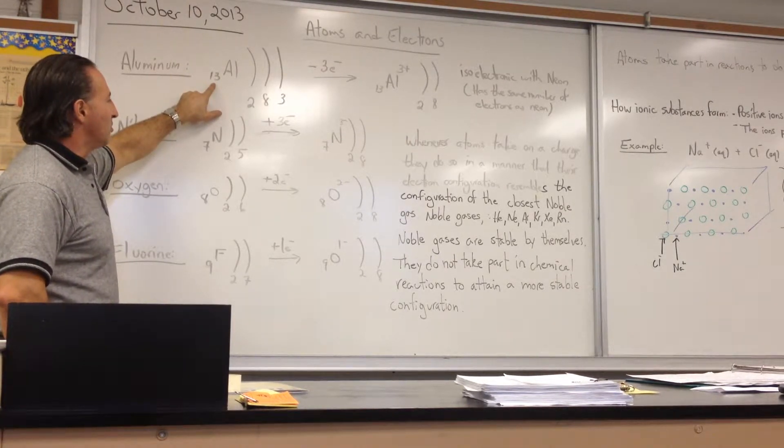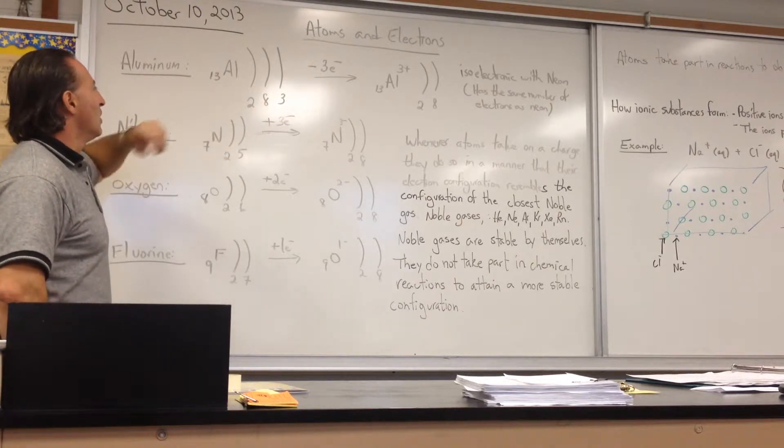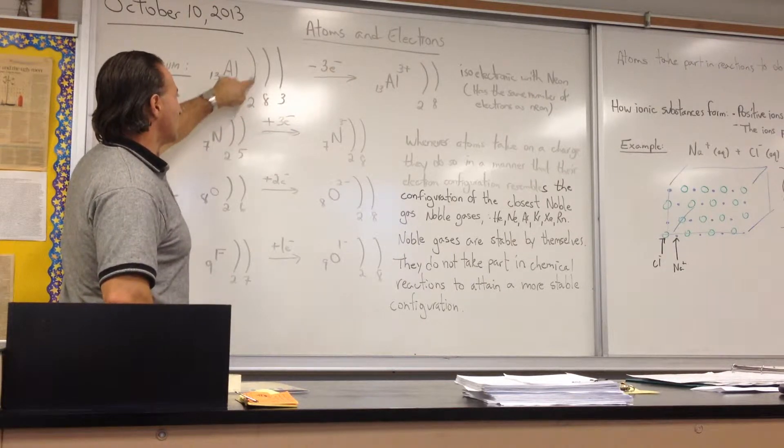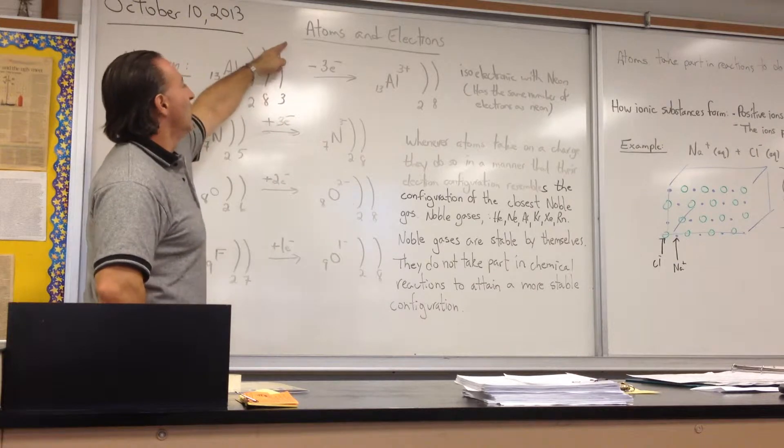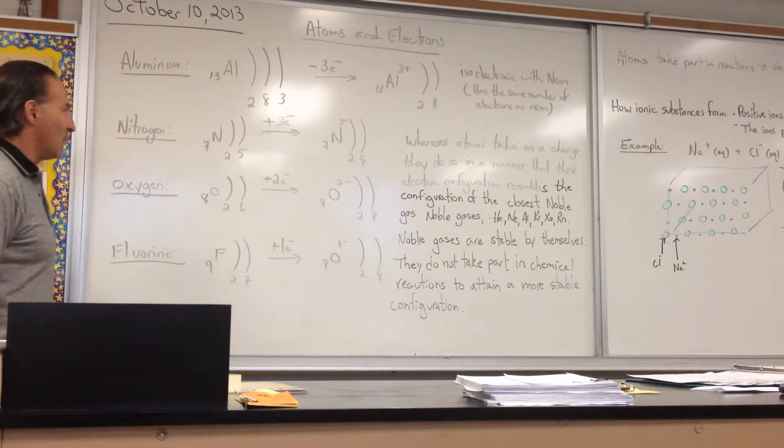And because it has 13 protons, it's going to have to have 13 electrons. So they fit in the orbitals, and the orbitals will hold a maximum of two for the first orbital, eight for the second one, eight for the third one, and a maximum of two for the fourth one, at least for our purposes now.